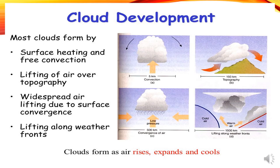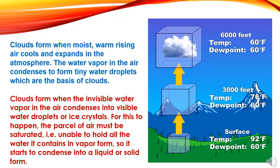Here we have shown the picture of cloud development. In this picture we have shown that clouds form as air rises, expands, and cools. Most clouds form by: first, surface heating and free convection; second, lifting of air over topography; third, widespread air lifting due to surface convergence; and fourth, lifting along weather fronts. Clouds form when moist, warm rising air cools and expands in the atmosphere. The water vapour in the air condenses to form tiny water droplets, which are the basis of clouds. For this to happen, the parcel of air must be saturated — unable to hold all the water it contains in vapour form — so it starts to condense into a liquid or solid form.